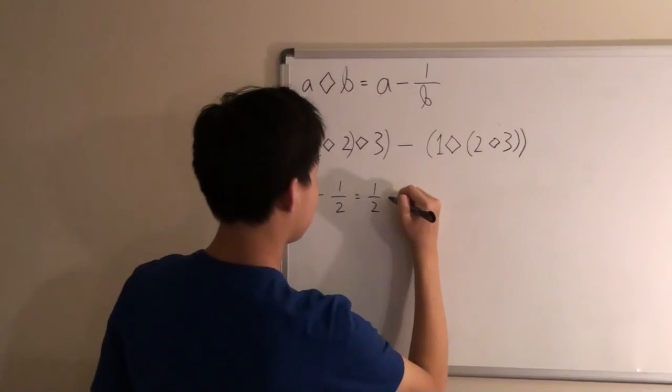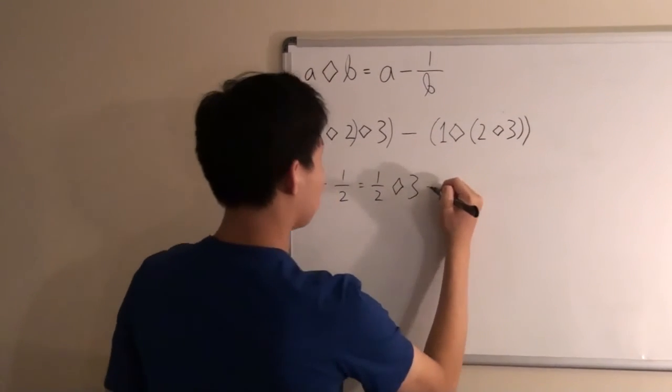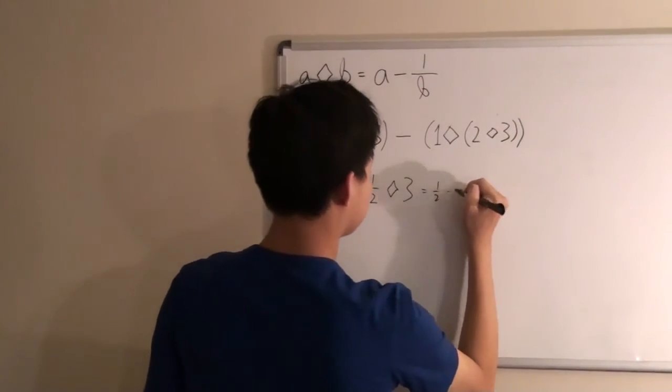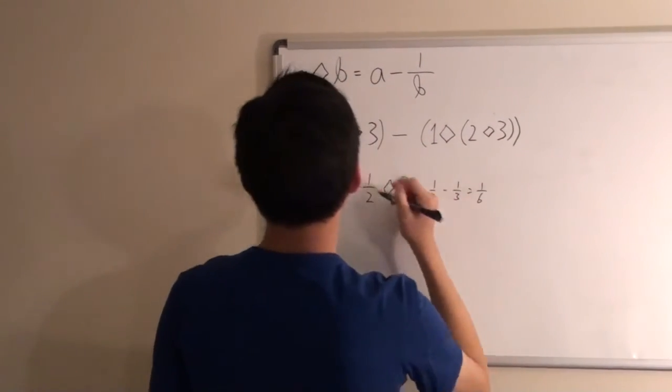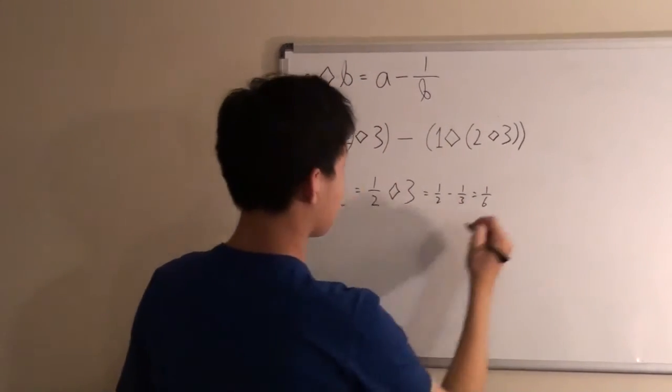Next, 1 half diamond 3 will be equal to 1 half minus 1 third, which is 1 sixth. So the first half of our expression is 1 sixth.